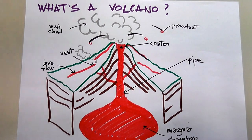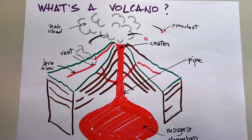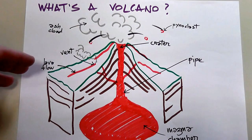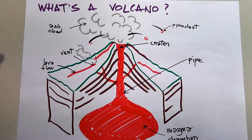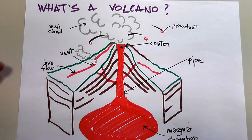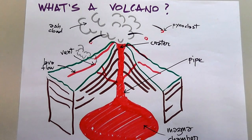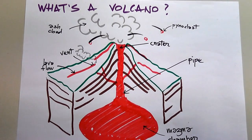So, what's a volcano? From a point of view of geology, a volcano is any crack on the surface of the Earth's crust from which molten rock, also known as magma, can come out.